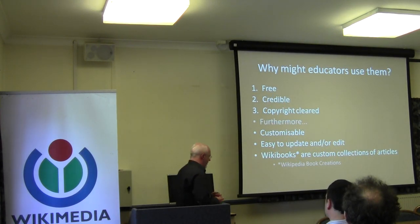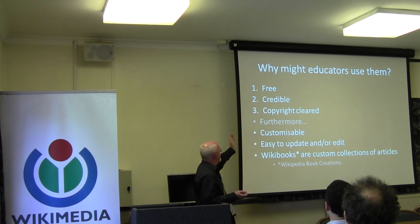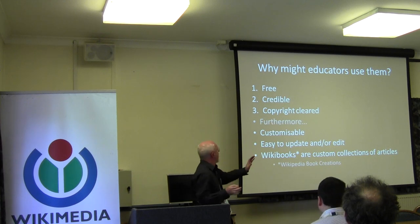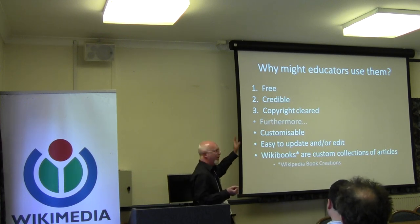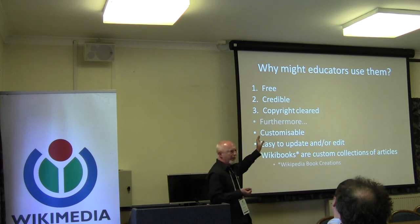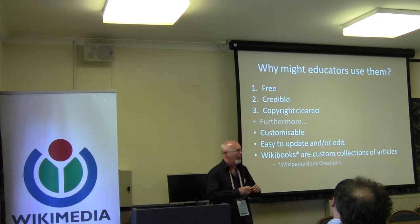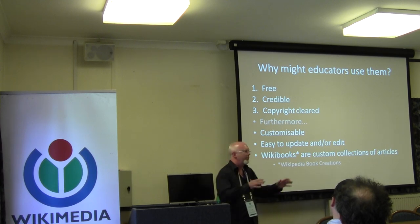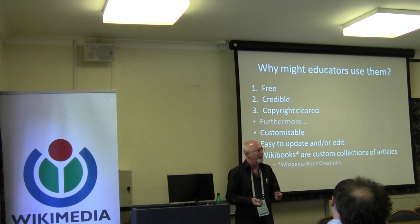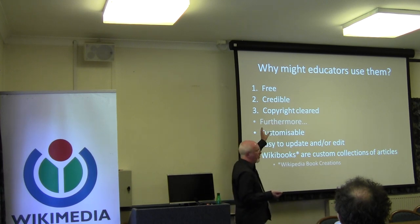Why might educators want to use these wiki books? In the elevator pitch, the first three reasons should sell it to a lot of people. They're free — fantastic. They're credible — an awful lot of the material on Wikipedia is very credible, and there are papers that have looked at it, and it's getting increasingly credible. And they're copyright cleared. Copyright clearance is a really big thing, especially as universities and other institutions increasingly put stuff onto virtual learning environments. There are all kinds of things that educators got away with where we were breaking copyright in closed classrooms — photocopying and printing — between us and students.